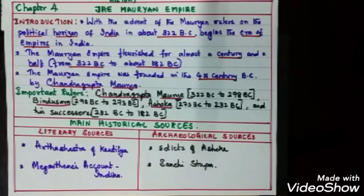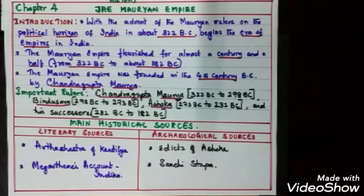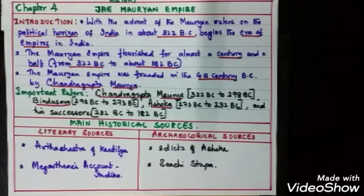Chandragupta Maurya was the founder; his rule was from 322 BC to 298 BC. His successor Bindusara ruled from 298 BC to 273 BC. Then his son, the most important and most popular emperor of India, Ashoka, ruled from 273 BC to 232 BC. Later, his successors ruled from 232 BC to 182 BC.